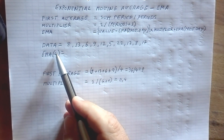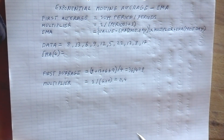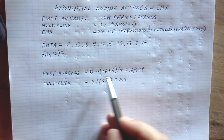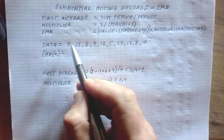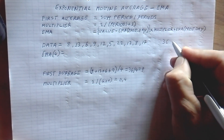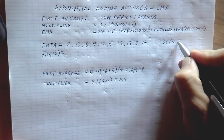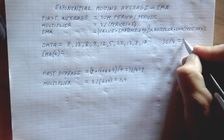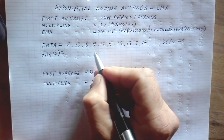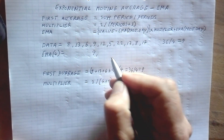We're going to calculate an EMA of 4, meaning for every 4 periods we calculate the exponential moving average. So the first value is the first average: 8 + 13 + 6 + 9 = 36, divided by 4, which gives us 9. That 9 is our first number for the exponential moving average.